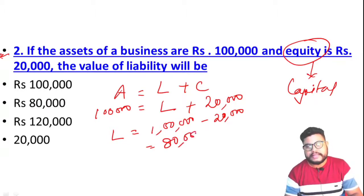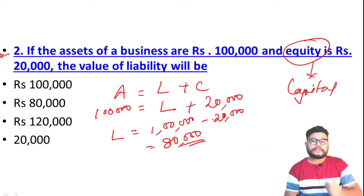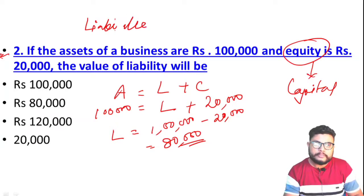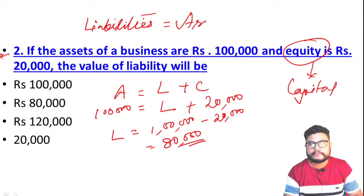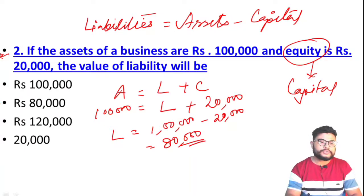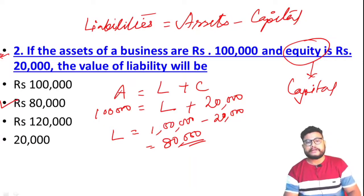The answer is 80,000. So from here we also derive a formula: Liabilities = Assets minus Capital. The correct option is option B, which is 80,000.